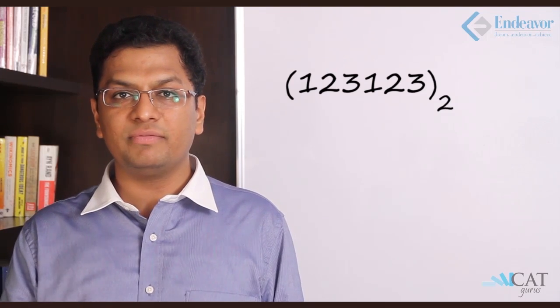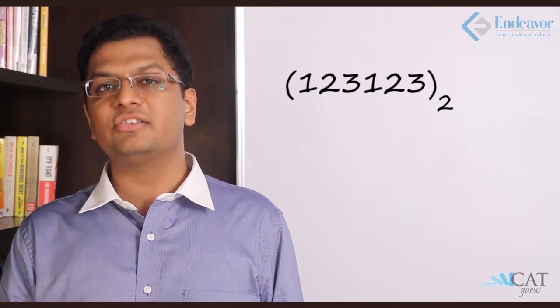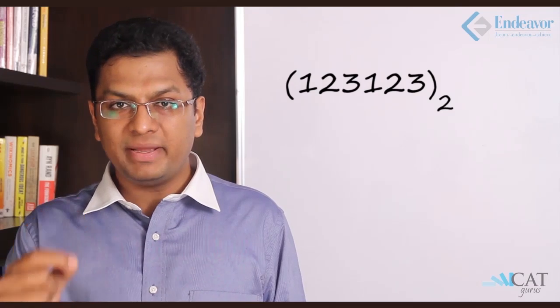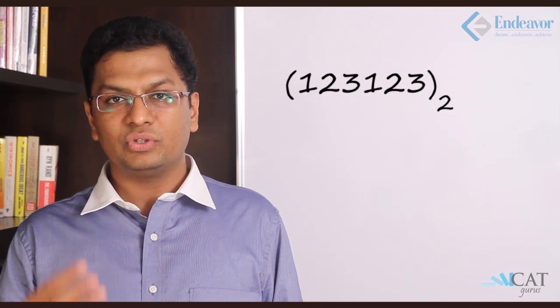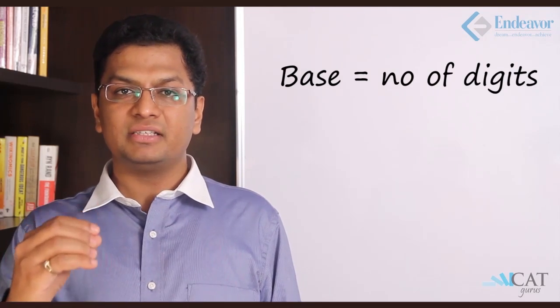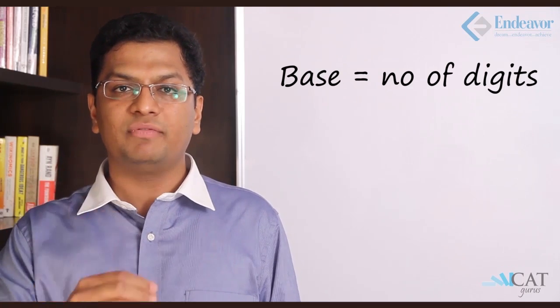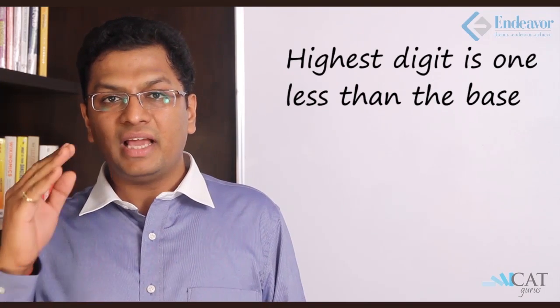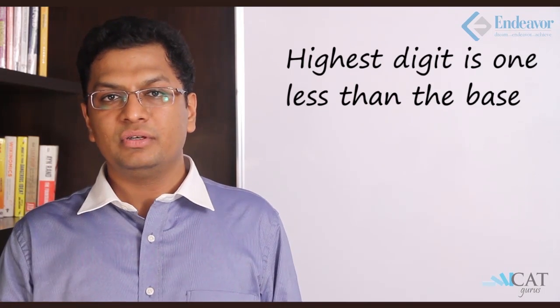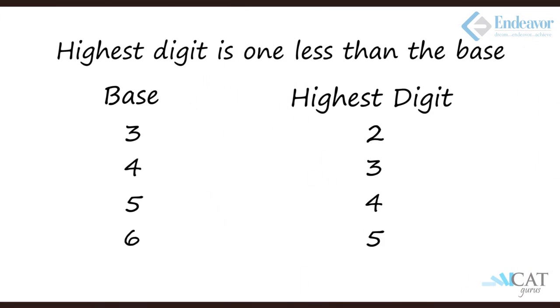However, 123123 on base 2 is wrong, because base 2 recognizes only two digits (0 and 1), yet here we are using the digit 3. The rule is: in any base system, the digits used must be fewer in count than the base, and the highest digit must be one less than the base. So for base 3, valid digits are 0, 1, and 2.